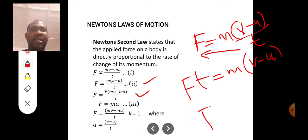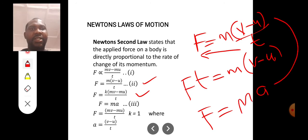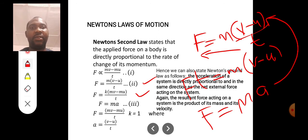We can also say that F is equal to mass times acceleration, since acceleration is changing in velocity with respect to time. So Newton's second law is also that the force acting on a body is a product of its mass and acceleration. That's another way we can define Newton's law.